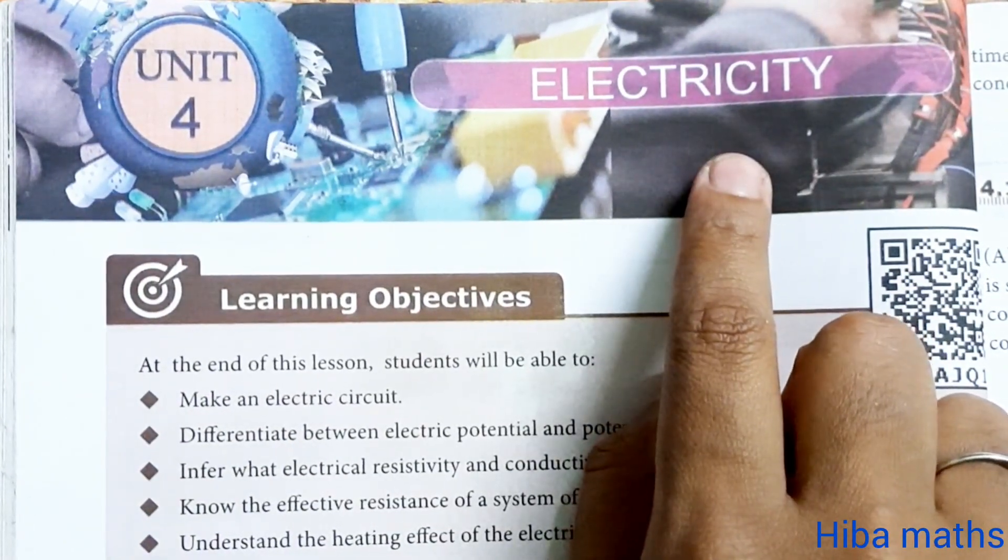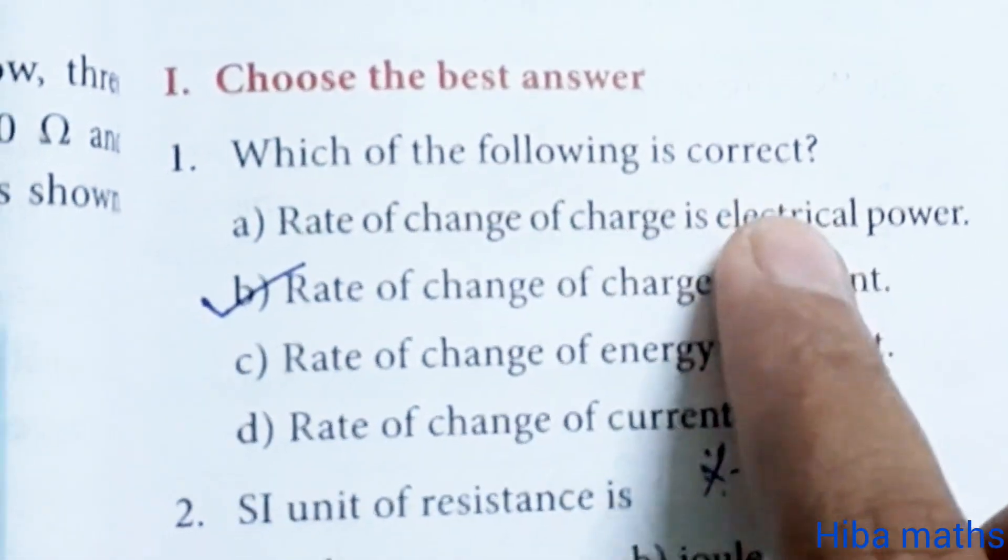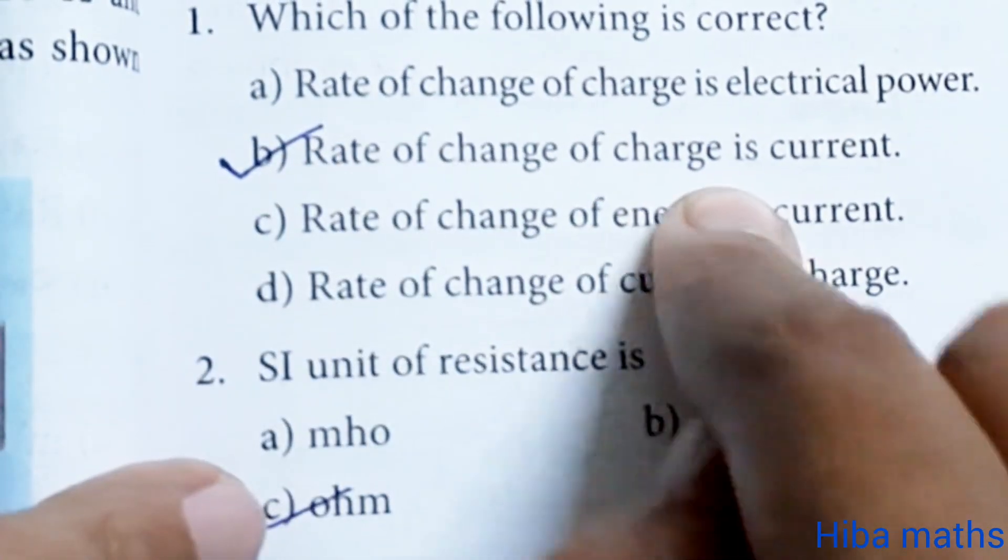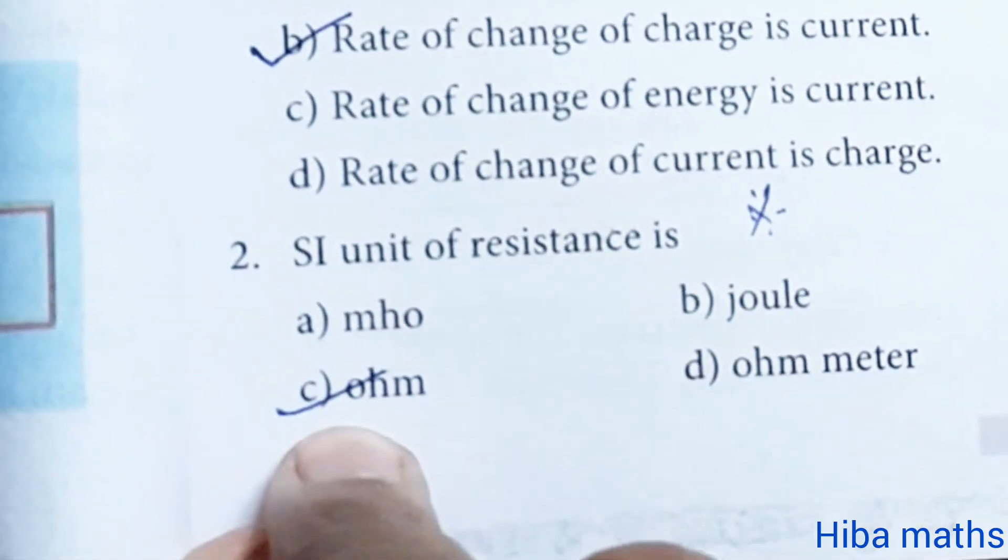First question, choose the best answer. Which of the following is correct? Rate of change of charge is current. SI unit of resistance is ohm.